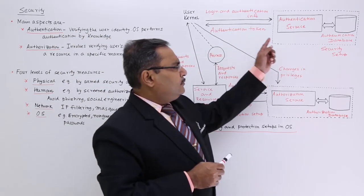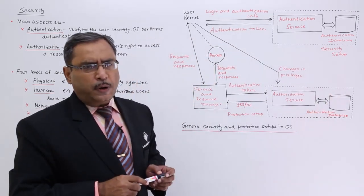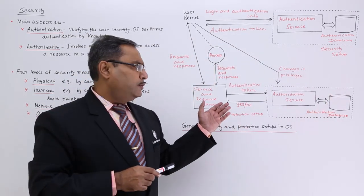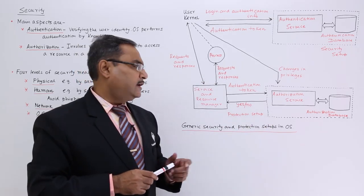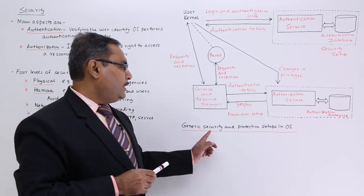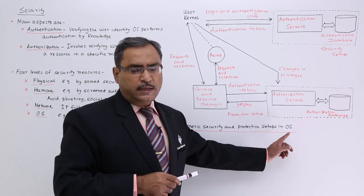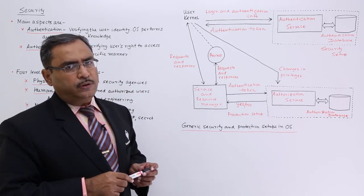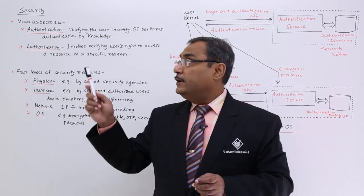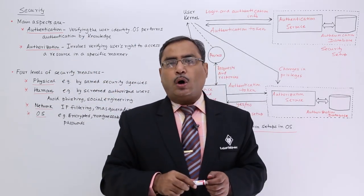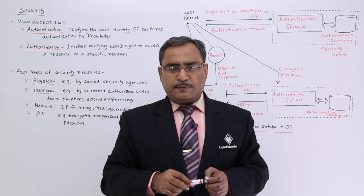So this is the total block diagram with the help of which we have tried to explain the authentication services and the authorization services and generic security and protection setups in ways. This is the footer of this particular block diagram. In the next video, we will be going for more details into the security measures of operating system. Thanks for watching this one.